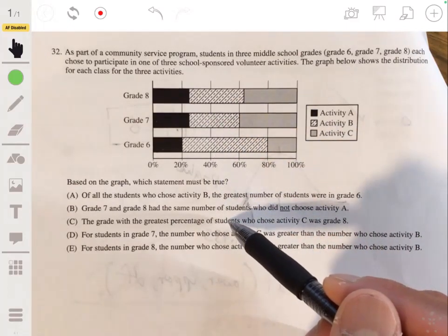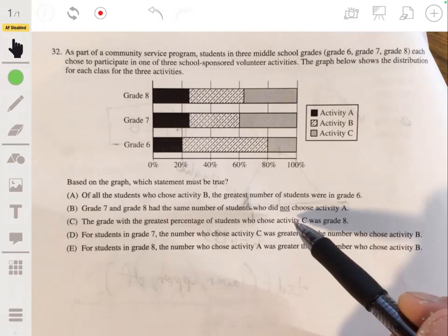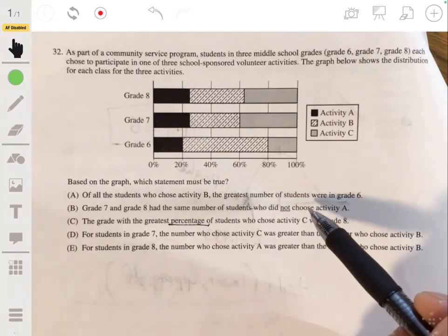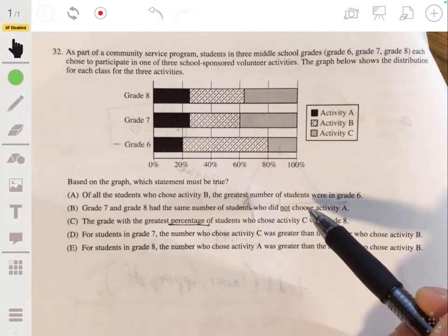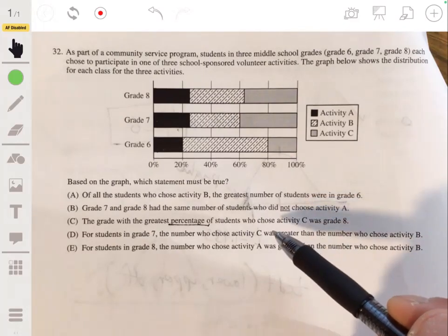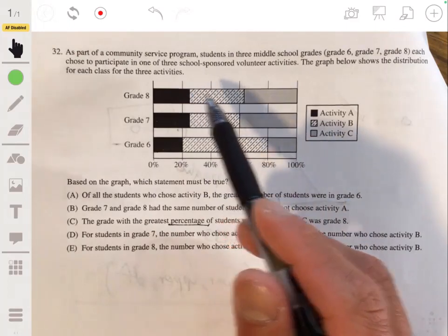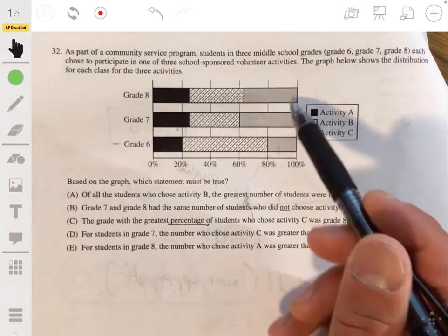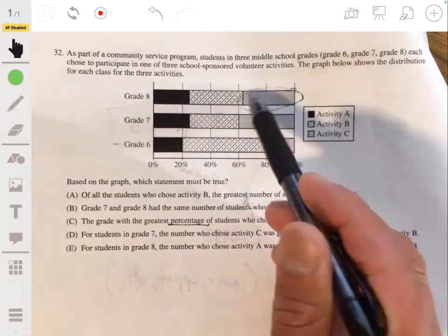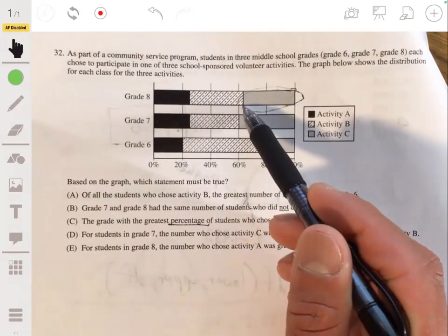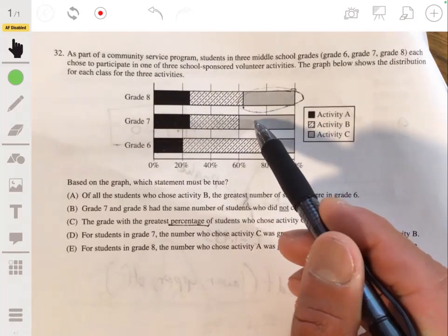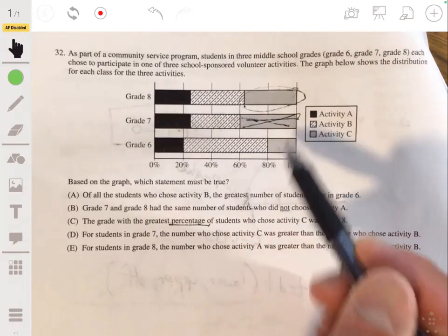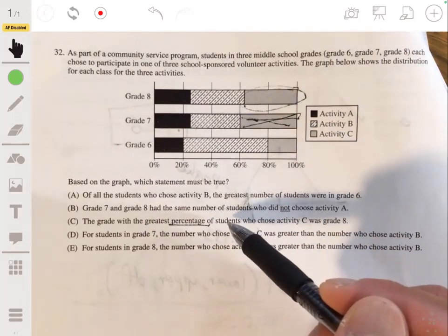The grade with the greatest percentage of students who chose activity C was grade eight. Okay, so we look at grade eight. If the greatest percentage that chose activity C, this would be the percentage, probably a little less than like 40, but no, it wouldn't be that because it would actually be seven, or grade seven. So this just happens to be false.